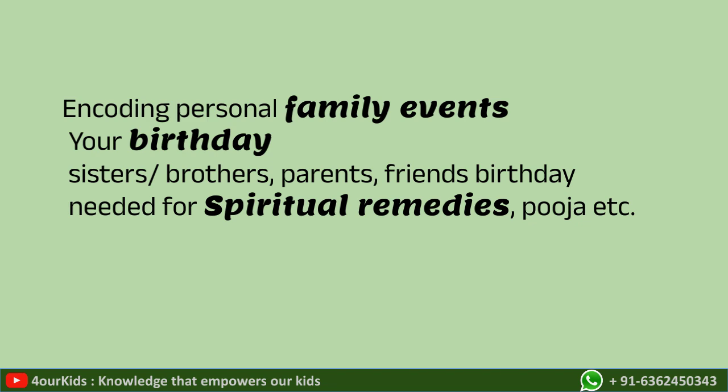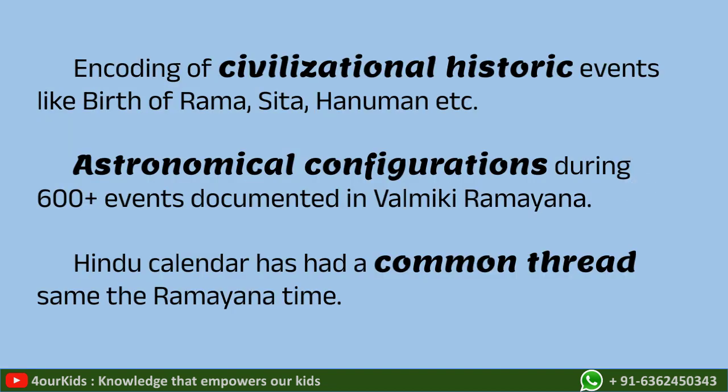The encoding of personal, family, and civilizational historic events is documented in the Hindu calendar. Hanuman was born on Chaitra Purnima, Sita was born on Visakha Navami — over 600 astronomical events are mentioned in the Valmiki Ramayana alone. This means the Hindu calendar has had a common thread from at least the time of Ramayana. So not only is the Hindu calendar the largest-selling document, it is also the largest living document, calculated year after year from at least the time of Bhagawan Ram.